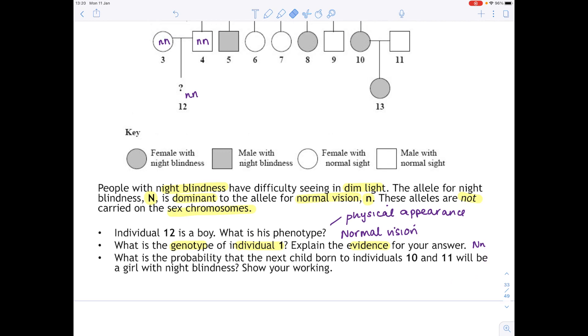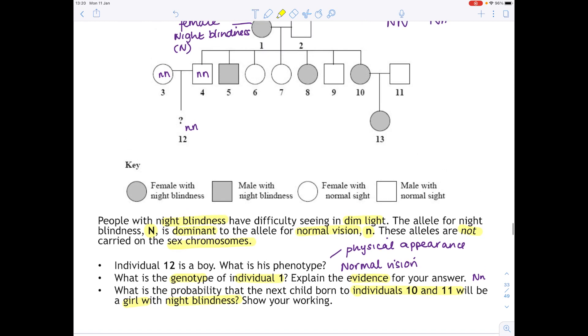So what is the probability that the next child born to individuals 10 and 11 will be a girl with night blindness? Show your working. So two things to point out. First of all, that they have to be a girl and second of all that they have night blindness. So we're looking at individuals 10 and 11. In order to work this out, we need to actually do a Punnett square.